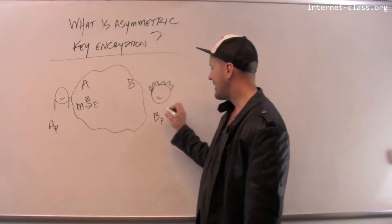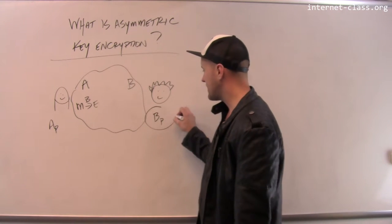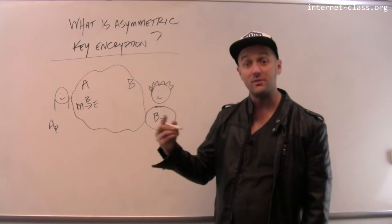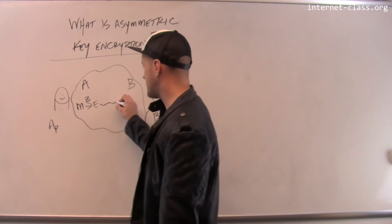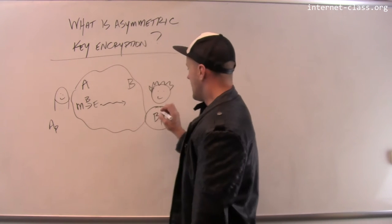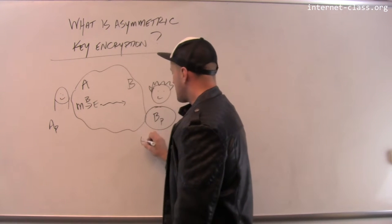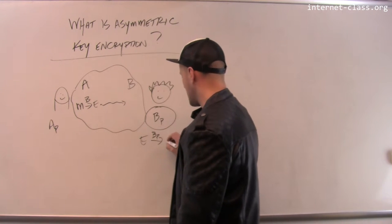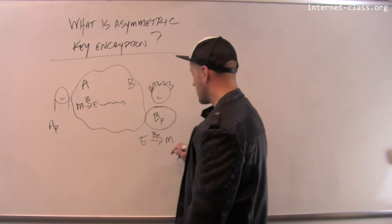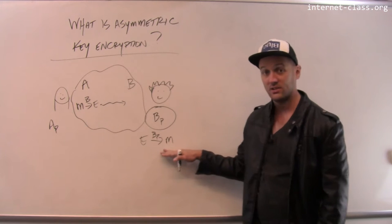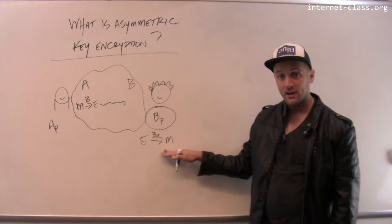Bob has this secret piece of information that he can use to undo that transformation. The message is sent across the internet to Bob, who receives it and uses his private key to recover the original message text.